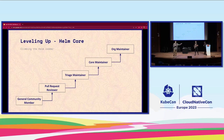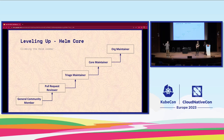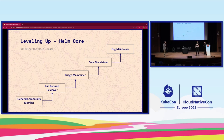If you want to become a Helm maintainer, here are the steps. Most people start as general community members. You can first be a pull request reviewer — anyone can review and test a PR. Then you can become a triage maintainer. After performing that role well for a while, core maintainers will put you up for vote to become a core maintainer. We have a couple of recent votes out there right now. Finally, if you spend significant time in the project, you can become an org maintainer.